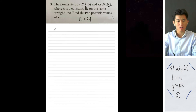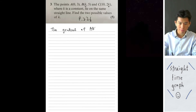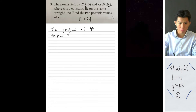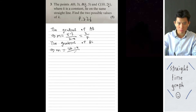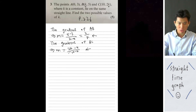For the gradient of AB: taking the given coordinates and letting one point be y2, x2 and the other y1, x1, we get 5 minus 3 over k minus 0, which equals 2 over k. For the gradient of BC, using its coordinates, we get 2k minus 5 over 10 minus k. Since both gradients are equal, we set 2 over k equals 2k minus 5 over 10 minus k.